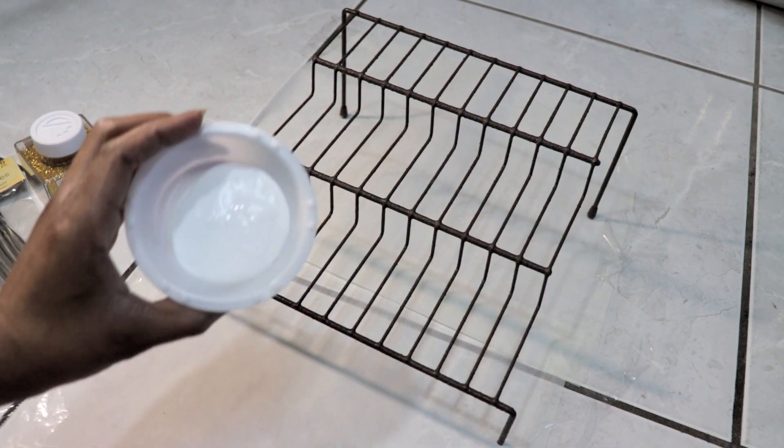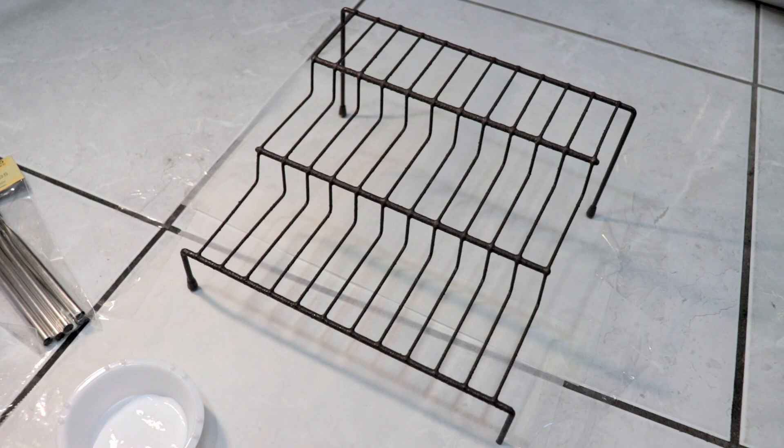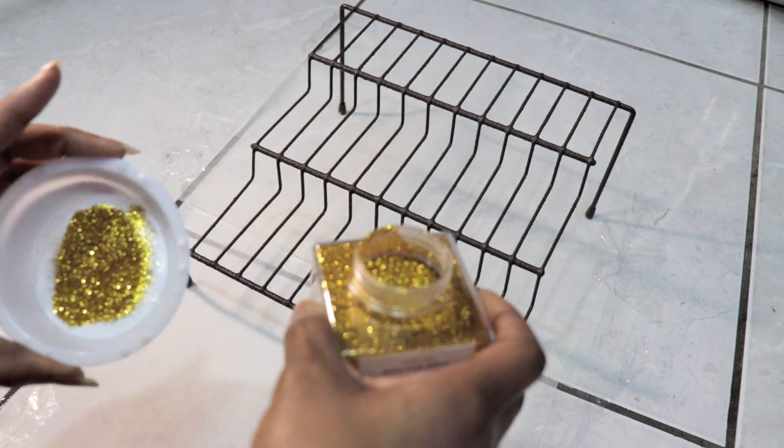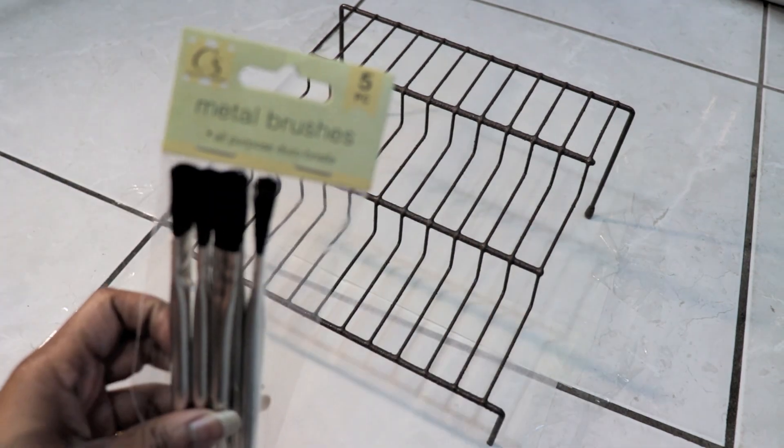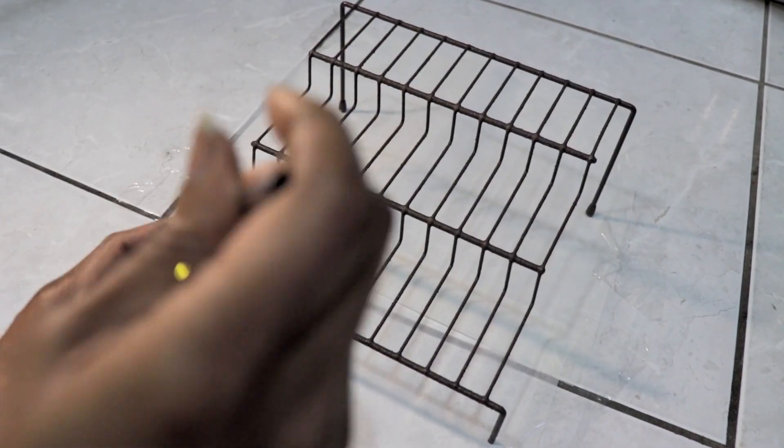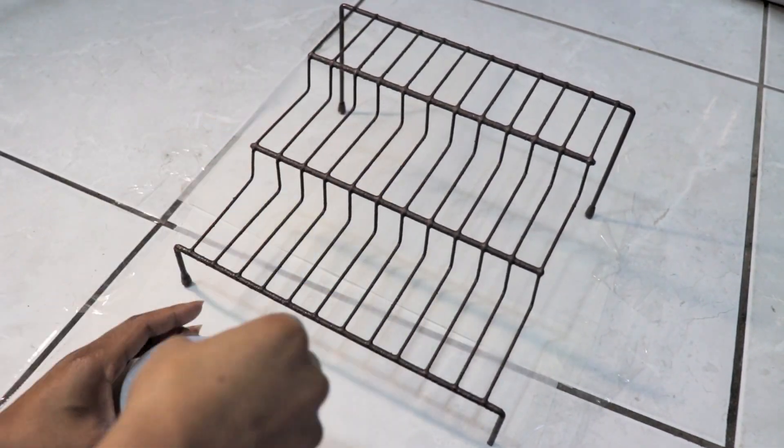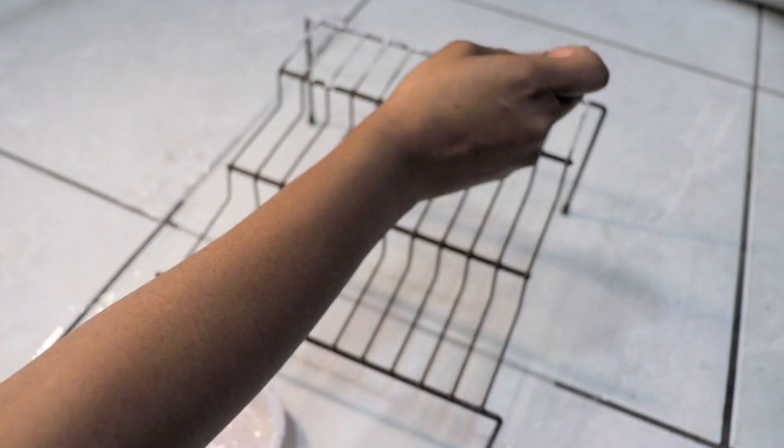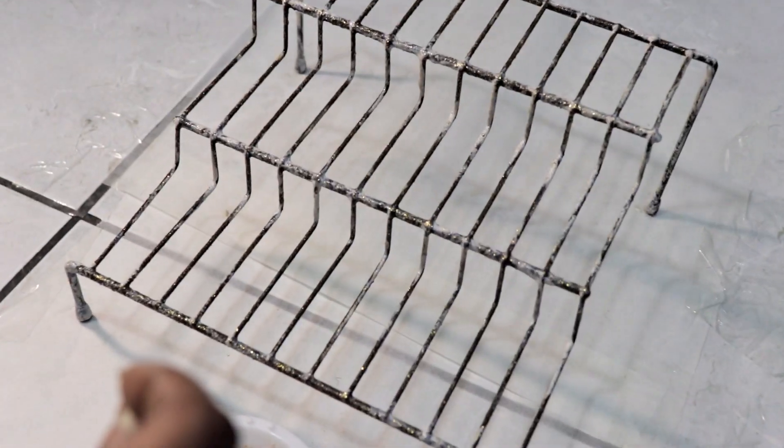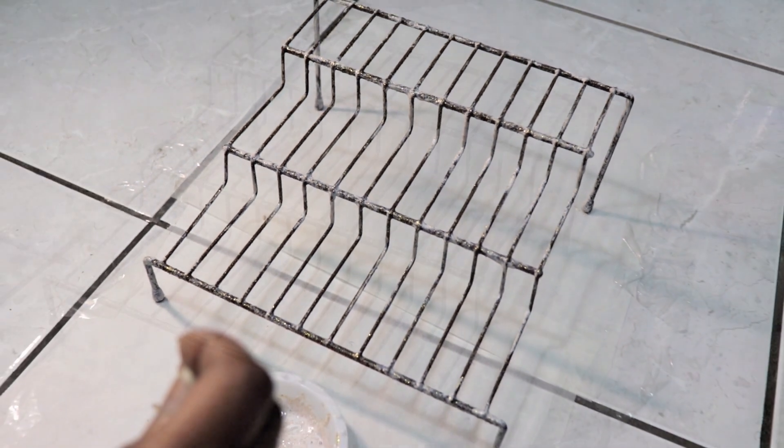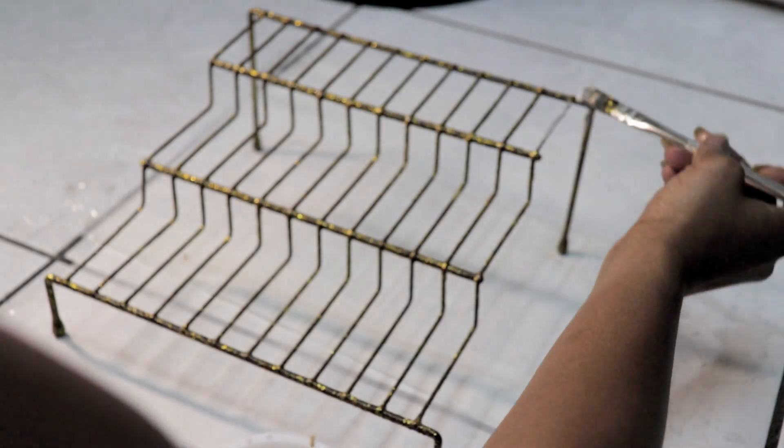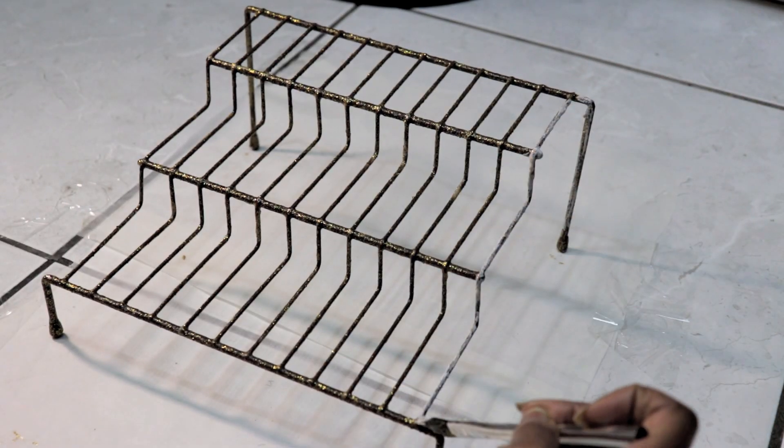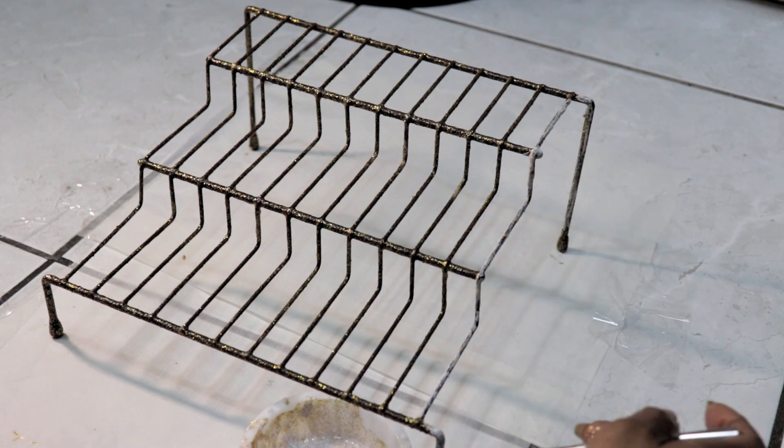Then grab your Mod Podge, your glitter, grab your brush and mix it in. Apply it heavily all over the shelf, then apply it only on the border to give it extra bling on the outer portion.